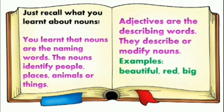Then, the nouns identify places — words like city, Pakistan, Karachi, Paris, hospital, museum, country. These are all nouns. All the names given to the animals are also nouns, and all the names given to things are also nouns. So, the nouns are the names of people, places, animals, or things. Now do you remember what nouns are?